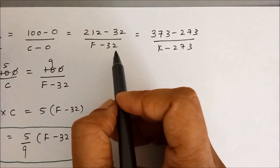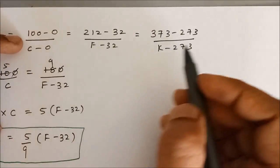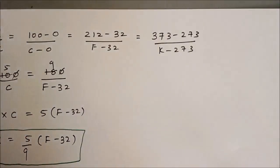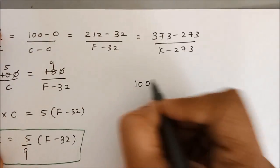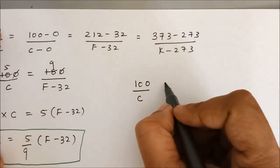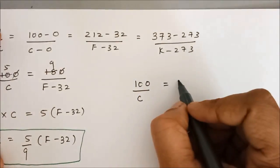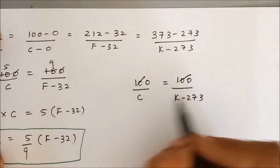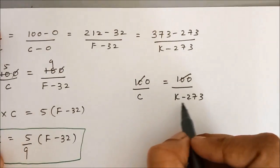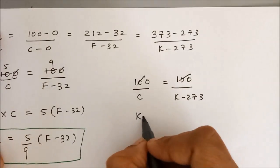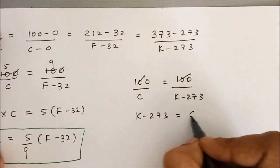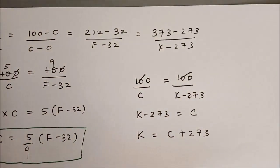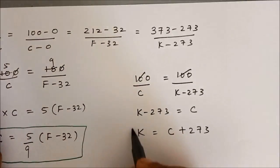Let us also convert Celsius into Kelvin by equating the Celsius and Kelvin expressions. It is 100/C = (373 − 273)/(K − 273), that is 100/C = 100/(K − 273). These two cancel, so cross multiplying gives K − 273 = C, therefore Kelvin equals Celsius plus 273. Here we also come up with another derivation.